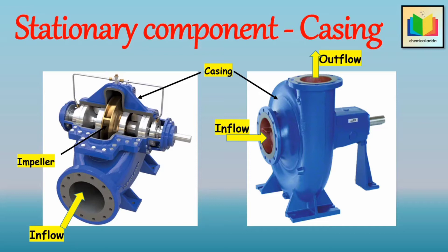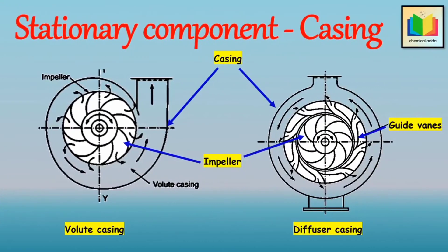Casings can be designed as solid casings or split casings. In a solid casing, the entire casing including the discharge nozzle is contained in one casting or fabricated piece. In a split casing, two or more parts are fastened together. When the casing parts are divided by a horizontal plane, it is described as horizontally split or axially split. When the split is in a vertical plane perpendicular to the rotation axis, it is described as vertically split or radially split. There are three general types of casings: circular casing, volute casing, and diffuser casing.